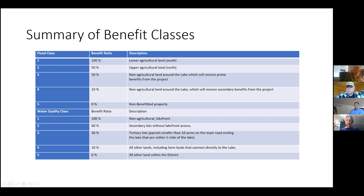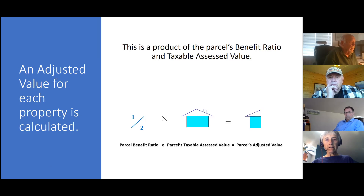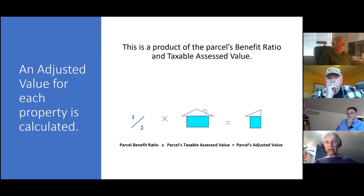Any questions as you go along, just let me know. Getting into how we actually do the calculations — we take an adjusted value for each property. We calculate that by taking the parcel benefit ratio percentage and multiplying it by their taxable assessed value to get the parcel's adjusted value.